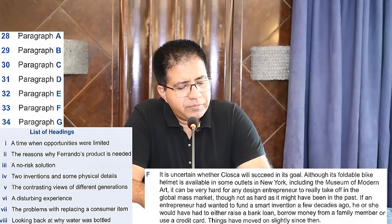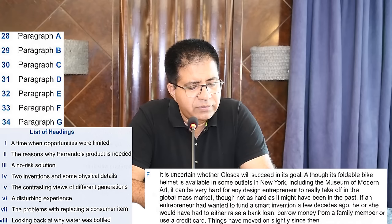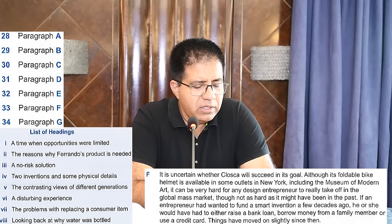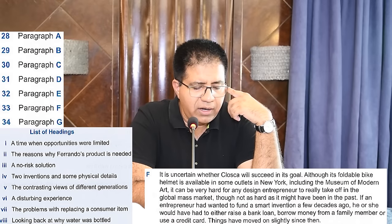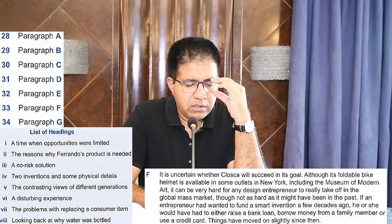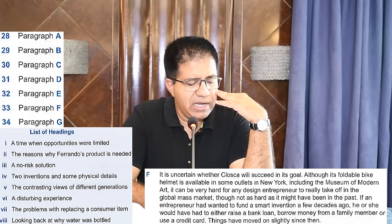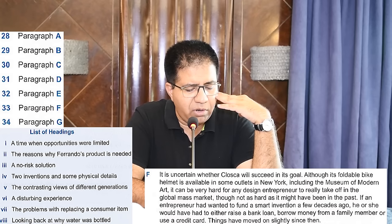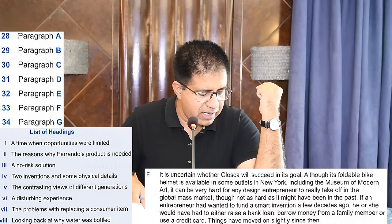Paragraph F: 'It is uncertain when Closca will succeed in its goal, although its foldable bike helmet is available in some outlets in New York, including the Museum of Modern Art. It can be very hard for any design entrepreneur to really take off in the global mass market — though not as hard as it might have been in the past.' A few decades ago they would have had to raise a bank loan, borrow money — opportunities were limited. Heading number one: 'Time When Opportunities Were Limited.' Question 33, paragraph F, is heading number one.